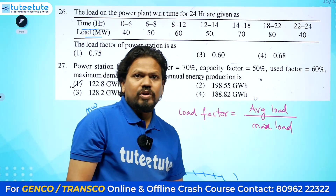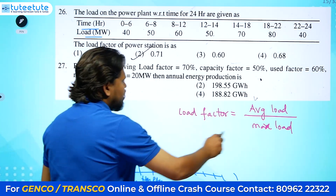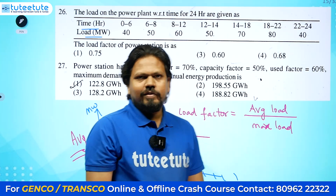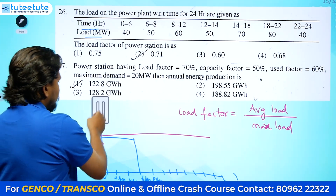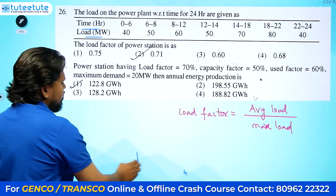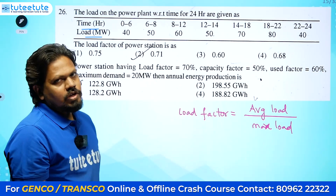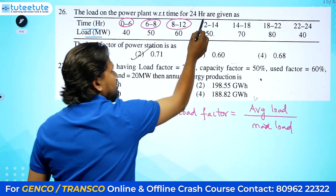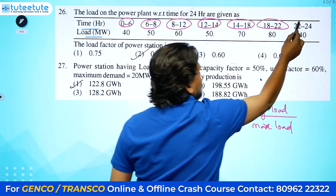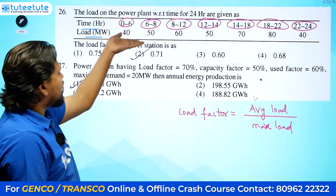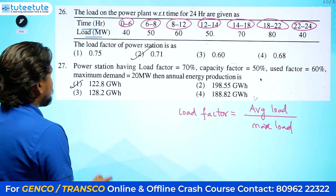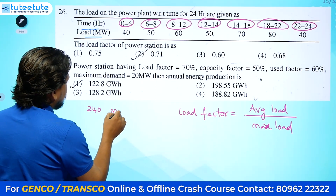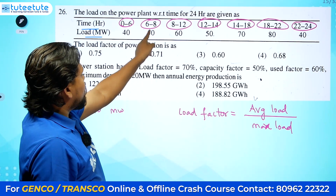From the load curve you find the average of all values. In the examination, you can do it directly. Six hours at a certain load, two hours at another, four hours, two hours, four hours, four hours, two hours — these are the time intervals. For 40 MW continuous load for 6 hours: 40 × 6 = 240 megawatt-hours.